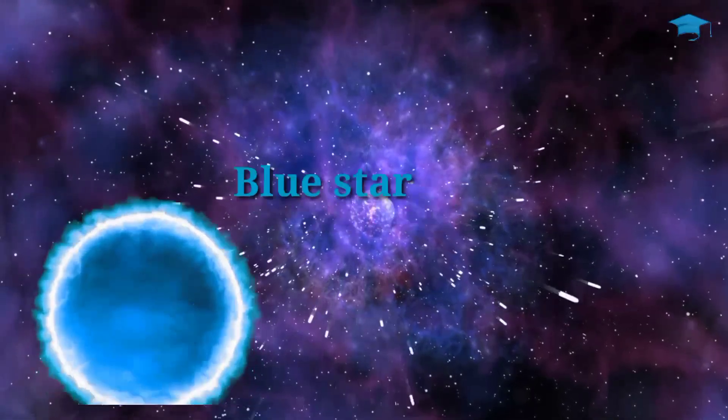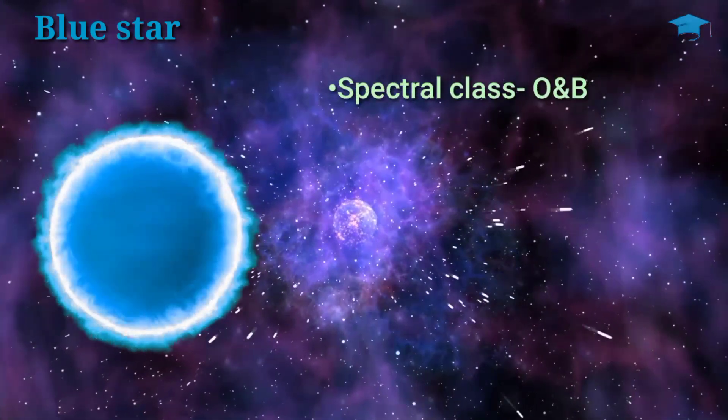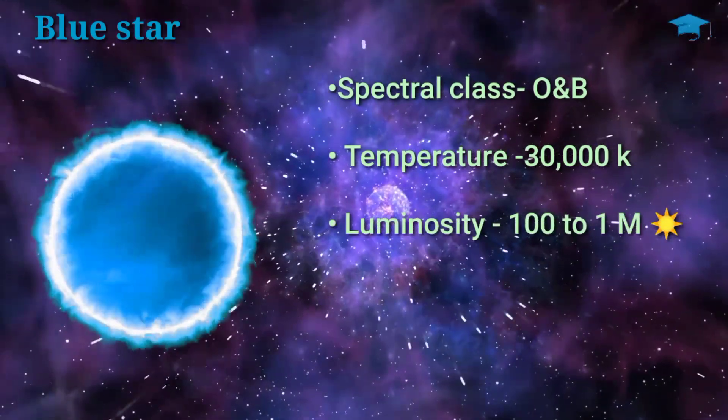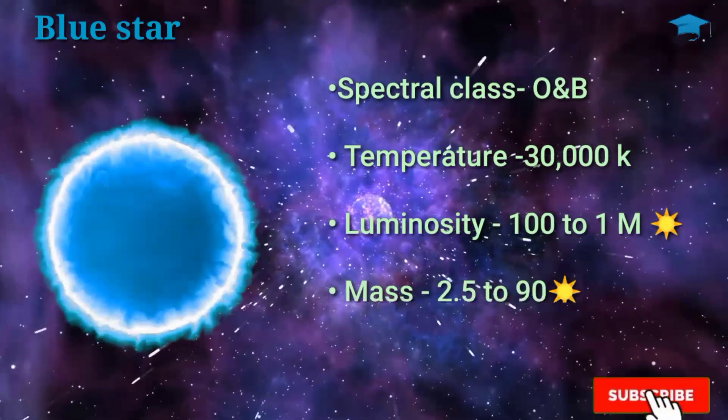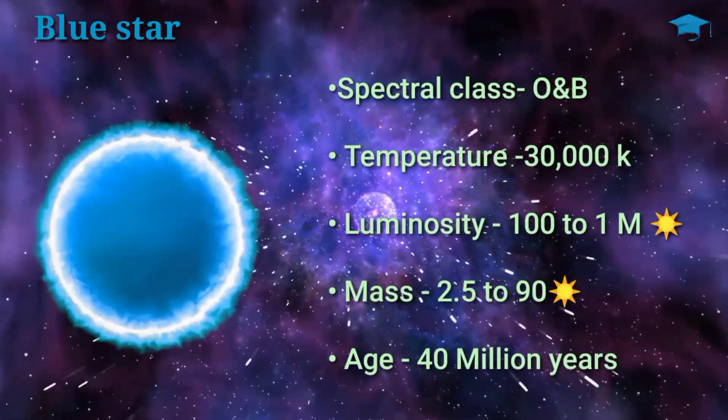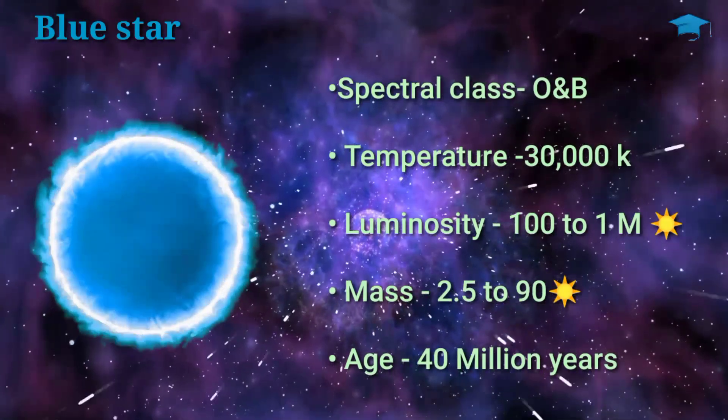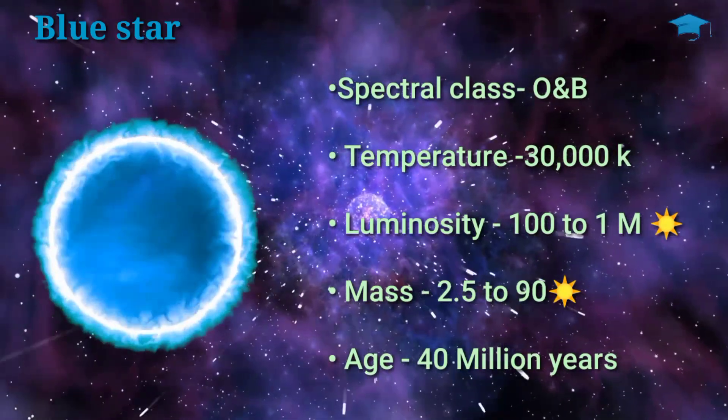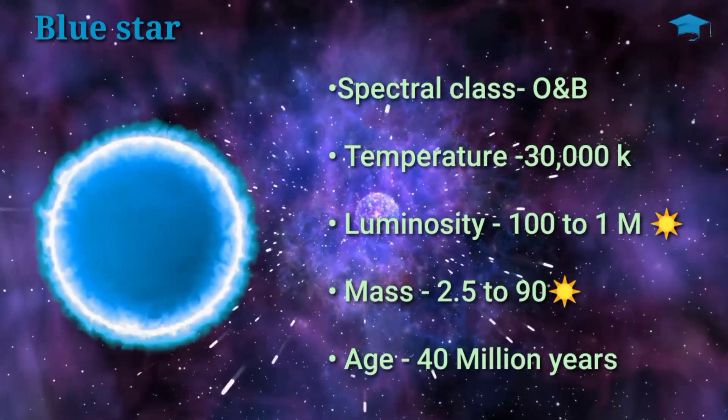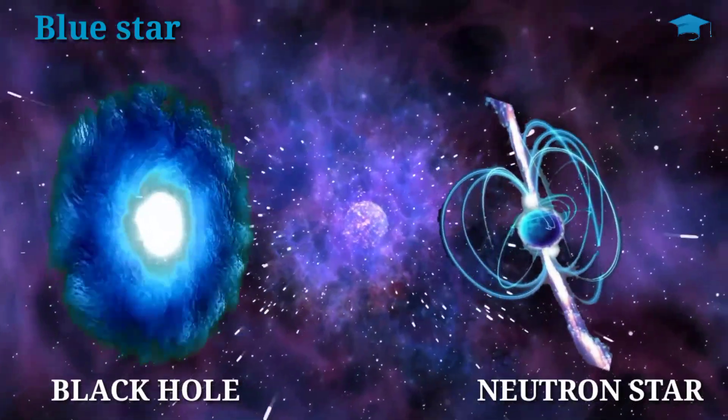The next one is a blue star. These stars are quite rare in our universe and with spectral class of O and B, that means they are really hot with temperatures around 30,000 Kelvin and with luminosities around 100 to 1 million times that of sun. They have a mass of around 2.5 to 90 times that of sun and last about 40 million years. Because of their extreme mass and temperature they have a short lifespan that ends in a supernova explosion resulting in either a black hole or a neutron star.